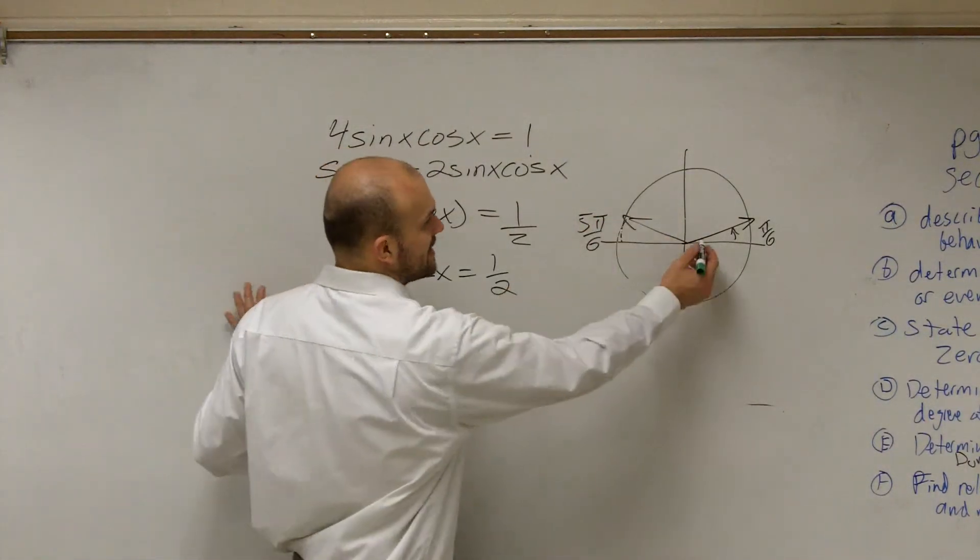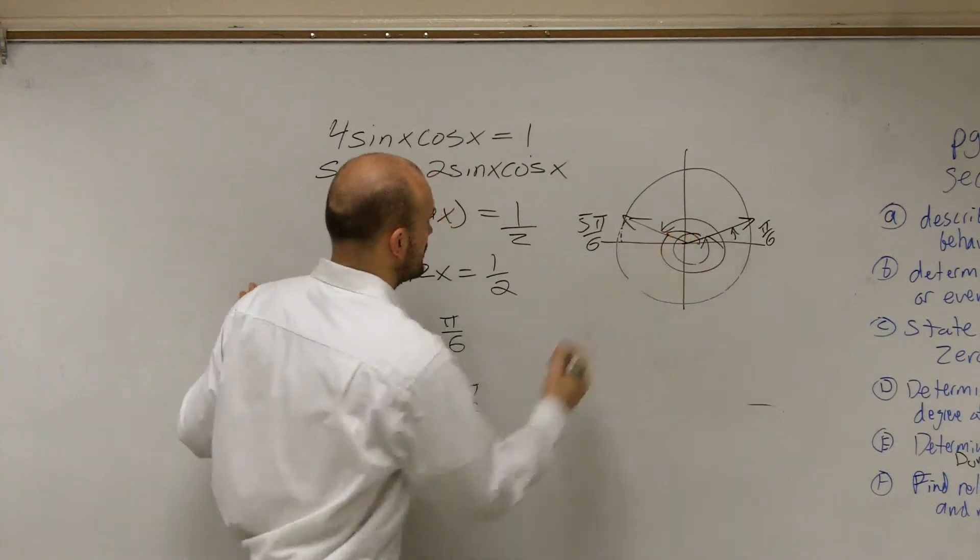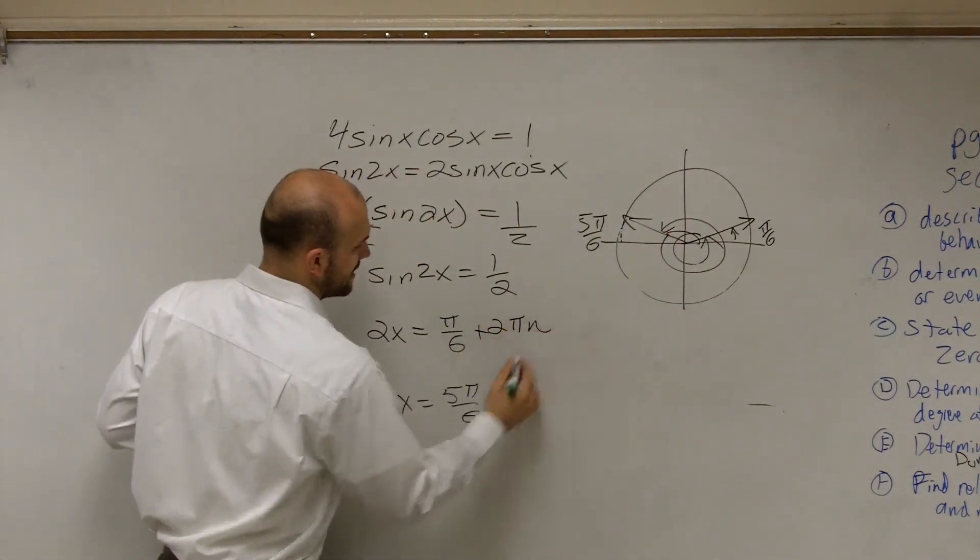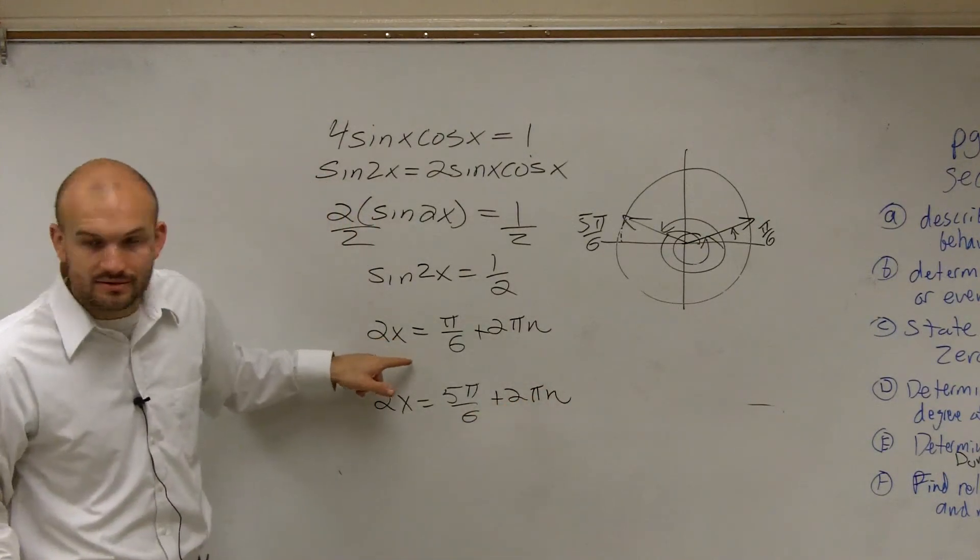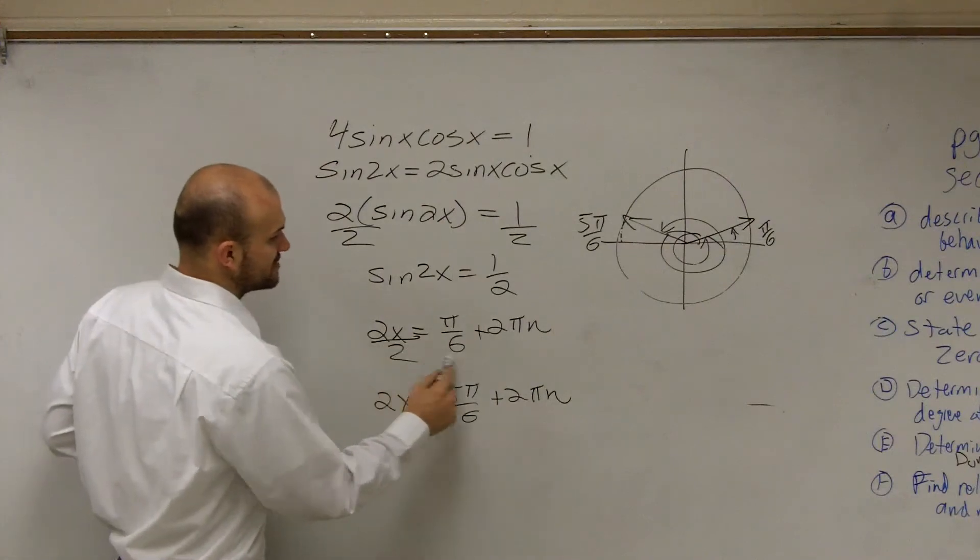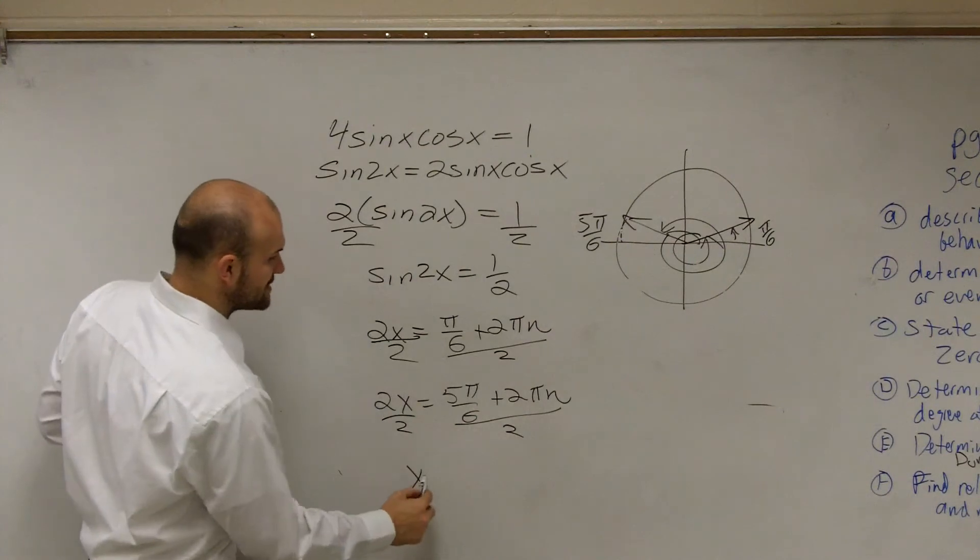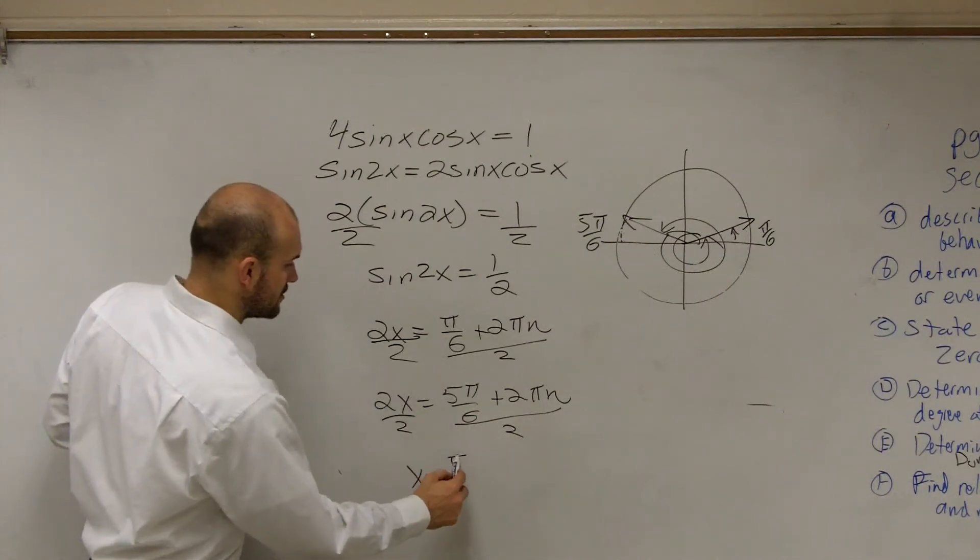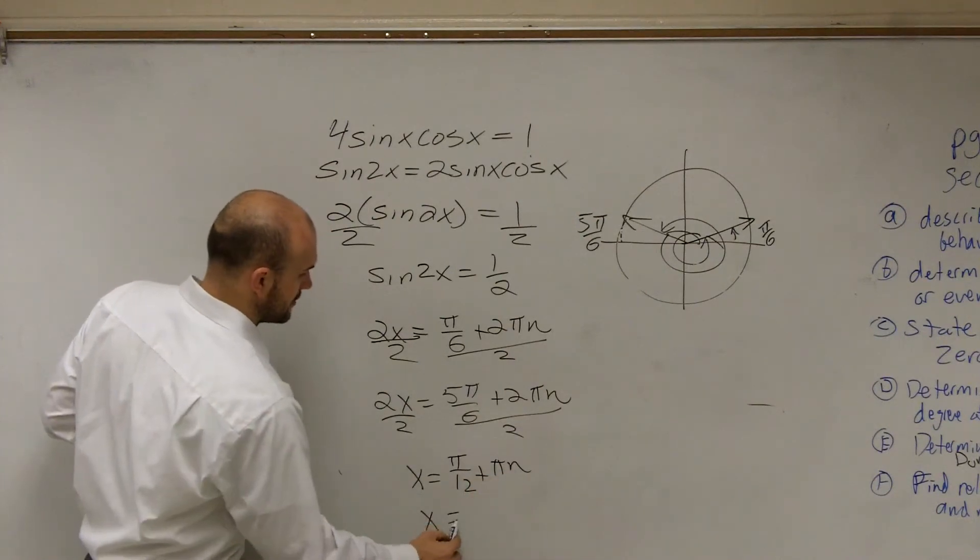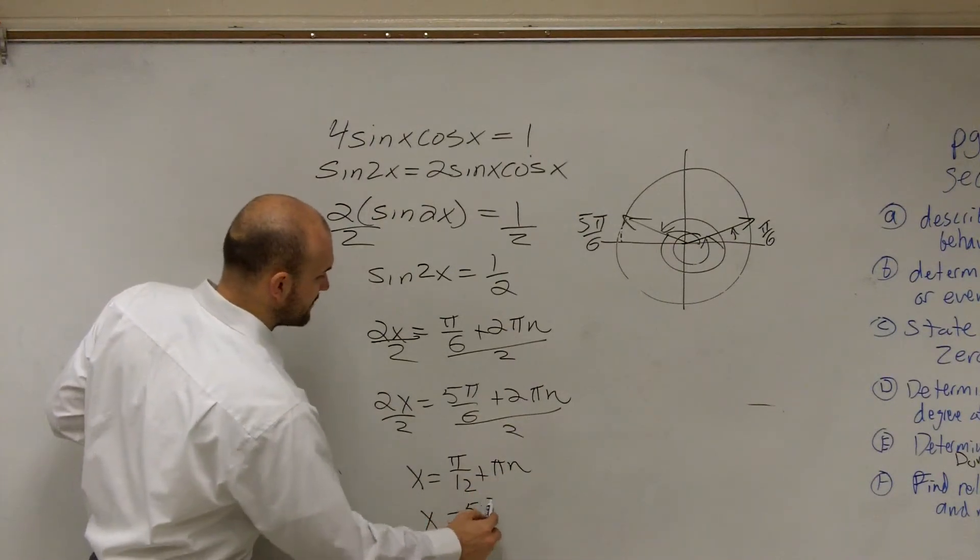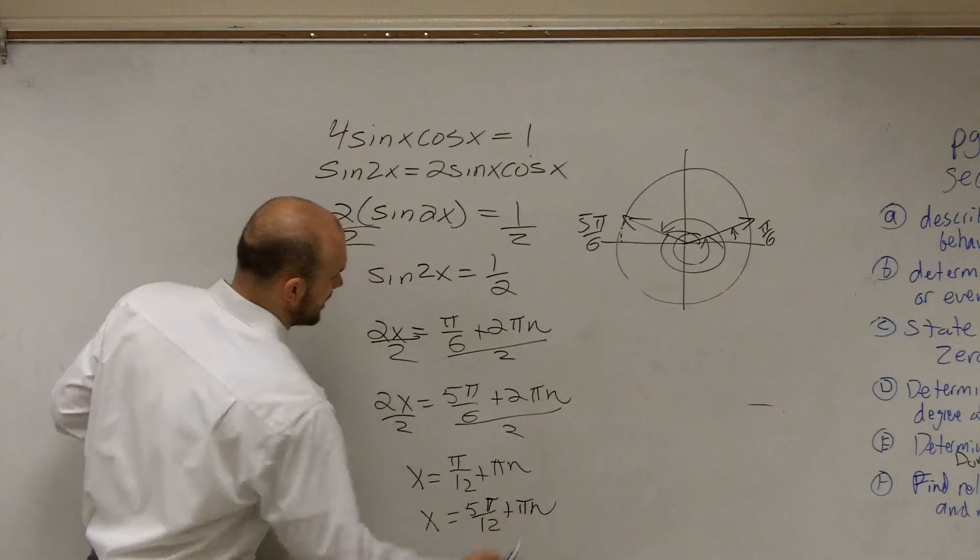Now, those are the two solutions on the interval of 0 and 2 pi. If I want to find all the solutions, I'm going to have to keep on adding 2 pi. So I'm going to add plus 2 pi n plus 2 pi n. And then our last final step is to solve for x. So I'm going to divide by 2. So therefore, my final answer is x equals pi over 12 plus pi n and x equals 5 pi over 12 plus pi n.